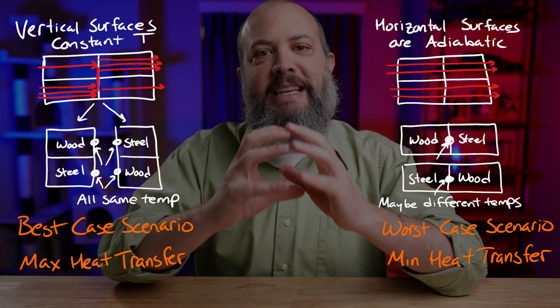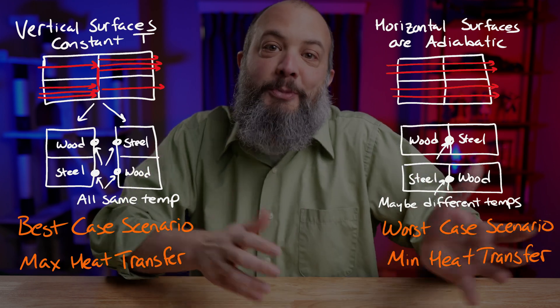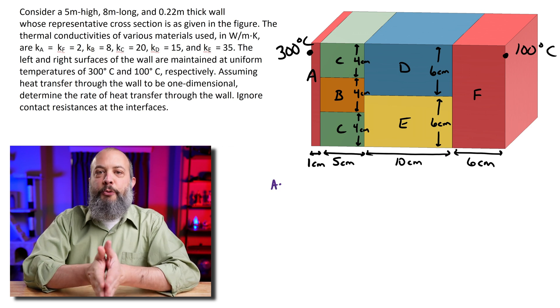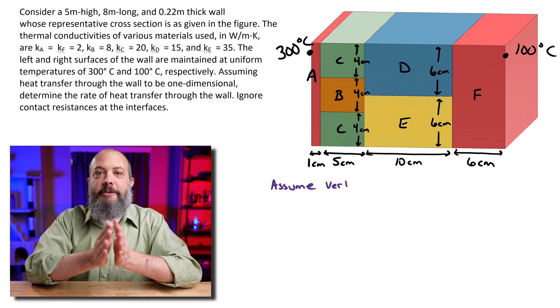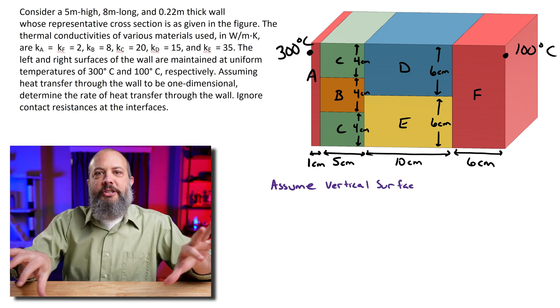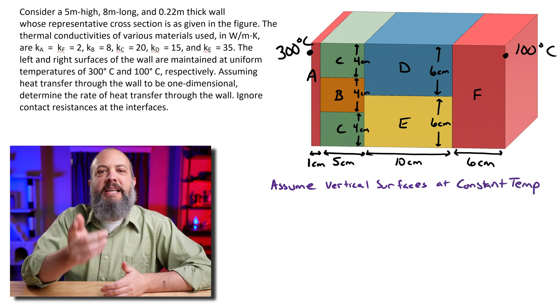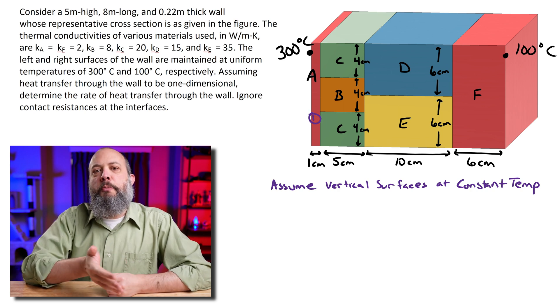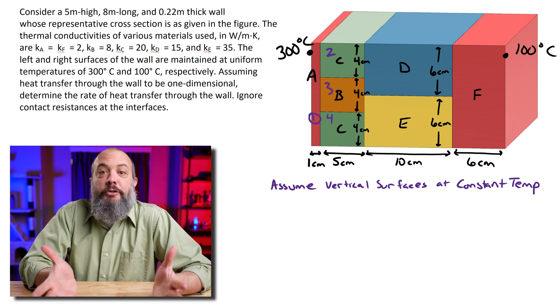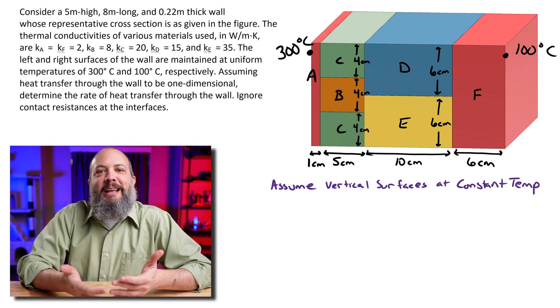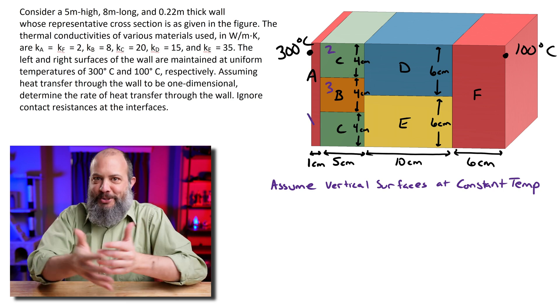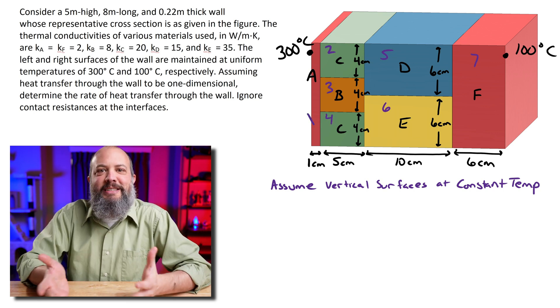By calculating both answers using both sets of assumptions, you give yourself a range. You know that your actual heat transfer has to be in between this minimum and maximum value. So first we are going to make the vertical split assumption — separating this wall vertically and assuming that all vertical surfaces have the same temperature. We'll solve this problem using thermal resistances, an electrical circuit with resistors in series and parallel representing all the paths that heat can use to get through the system.